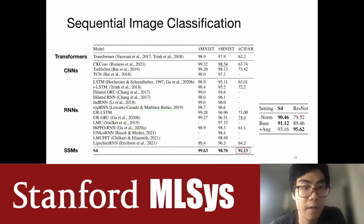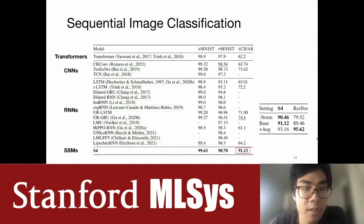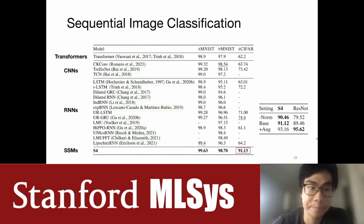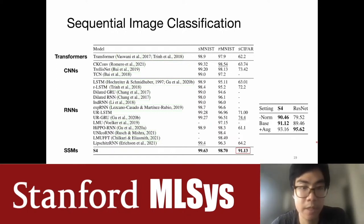First of all, we started with one of the most standard sequence modeling benchmarks, which is simply doing image classification where your image is flattened into a sequence of pixels. This is catching on in models such as the vision transformer. The most pure version is doing classification on images purely from pixels, seen as a generic sequence where the model doesn't know about the 2D structure.